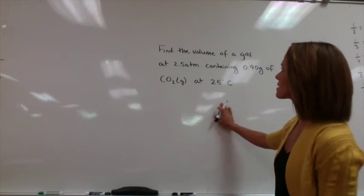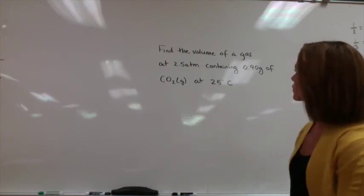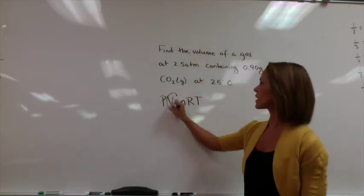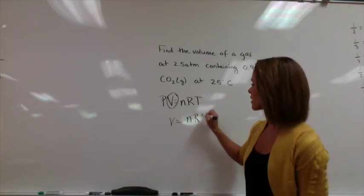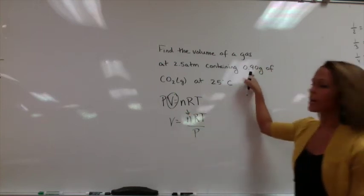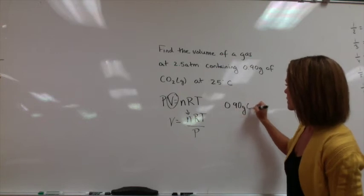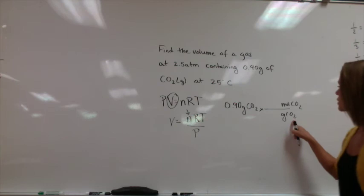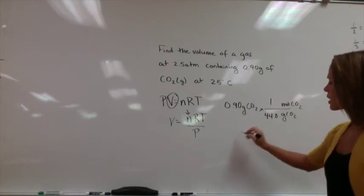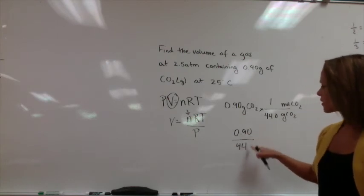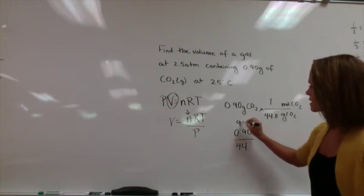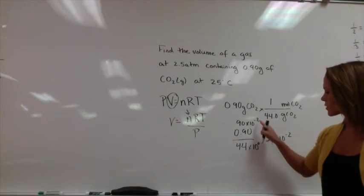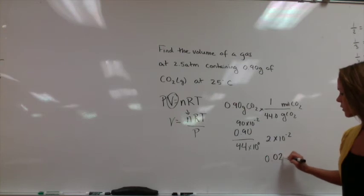The next problem is a gas law problem. Find the volume of a gas at 2.5 atm containing 0.90 grams of carbon dioxide at 25 degrees C. This is the ideal gas law, PV = NRT. Rearrange before you start so you don't make a mistake. We need moles, but we were given grams. The molar mass of CO₂ is 44.0 grams per mole (16 times 2 is 32, plus 12). We take 0.90 divided by 44: 44 goes into 90 almost 2 times, like 88. So this is 90 times 10 to the negative 2, giving 2 times 10 to the negative 2, which is approximately .02 moles.